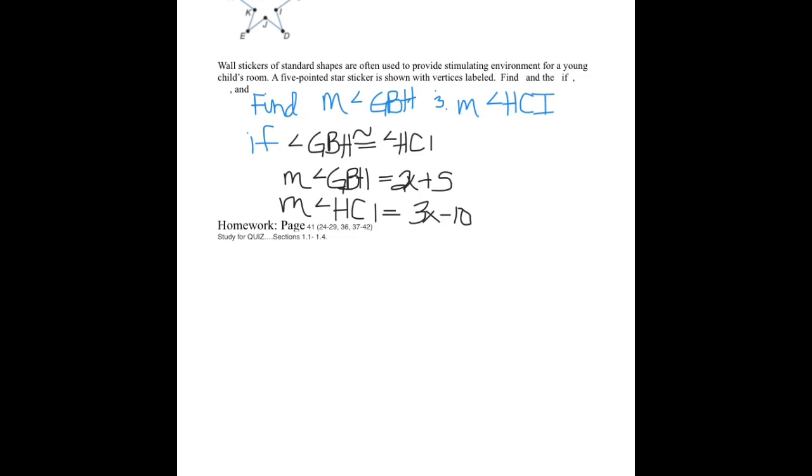Well, here's the thing. I know that angle GBH is congruent to angle HCI, meaning that this measure is congruent to that measure. If the angles are congruent, that means the measures are equal. So that means the measure of GBH, which is 2X plus 5 has to be equal to 3X minus 10.